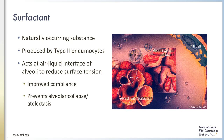Once collapsed, alveoli require higher pressures in order to reinflate. The alveolus on the left side of the image demonstrates an ideal open state due to the presence of pulmonary surfactant, with a resultant lowering of alveolar surface tension. Reduction of surface tension improves lung compliance and helps to prevent alveolar collapse and lung atelectasis.